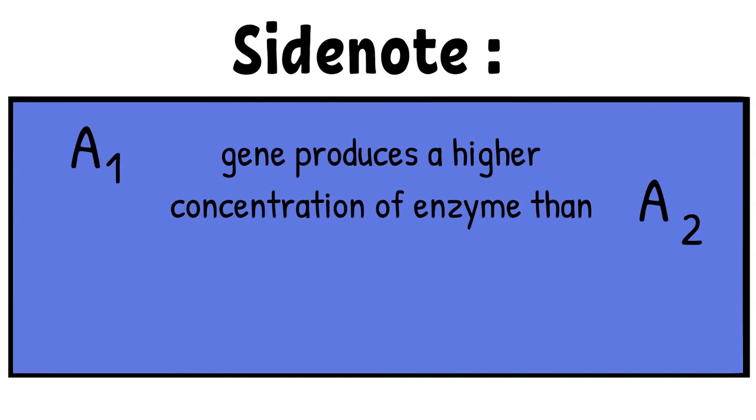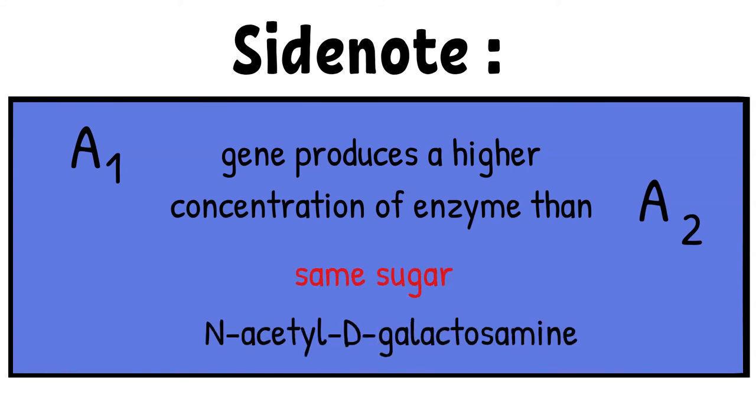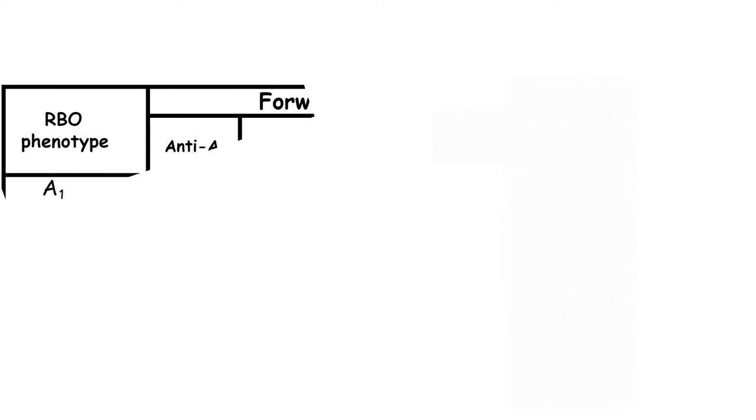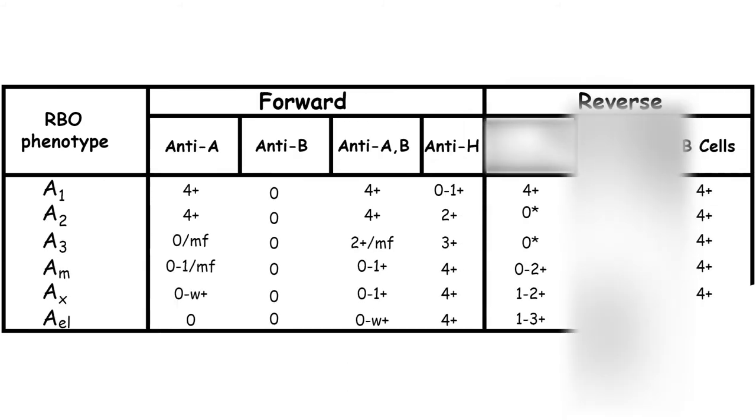I want to point out that we can classify A subgroup into A1 and A2, but the sugar that converts H antigen into A antigen is still N-acetyl-D-galactosamine. Here is a table showing reactivity of A subgroup.